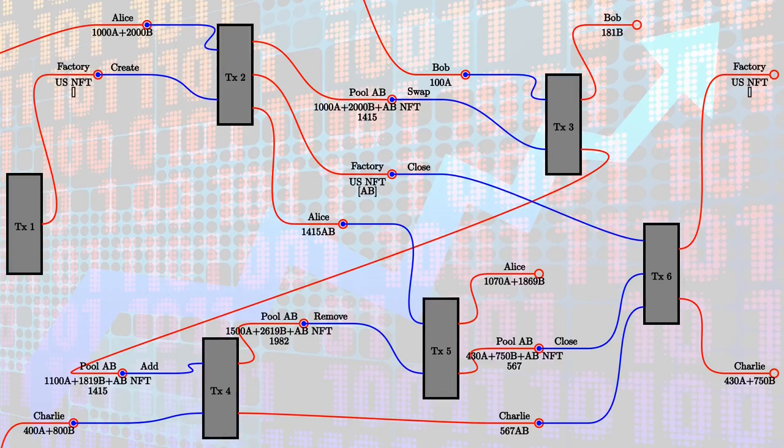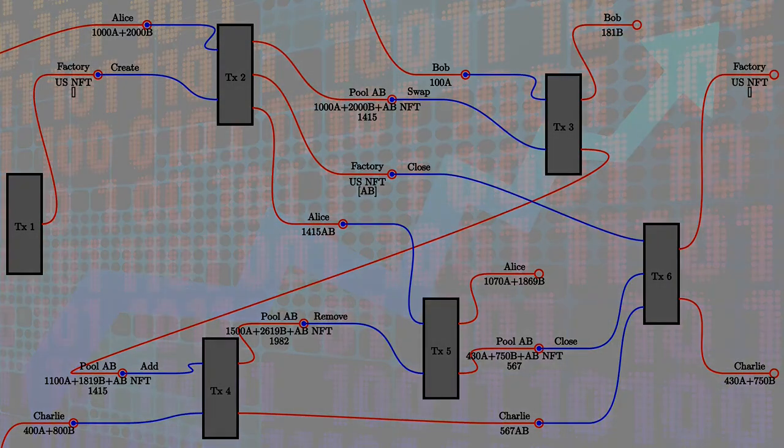For the close operation, the two outputs are: the updated factory (with the pool removed from the list) and all remaining tokens from the pool going to Charlie. The remaining liquidity tokens are burned and Charlie gets everything left in the pool. The code for Uniswap is actually part of the Plutus repository, in the Plutus use cases package, in the Plutus.contracts.uniswap module, which re-exports five modules: on-chain, off-chain, types, pool, and trace.